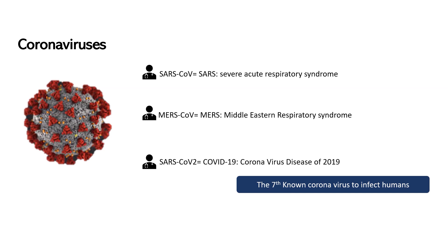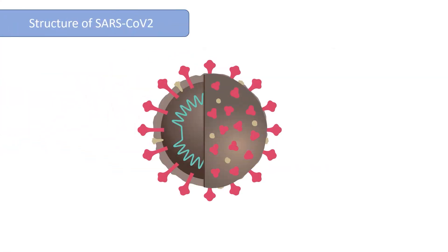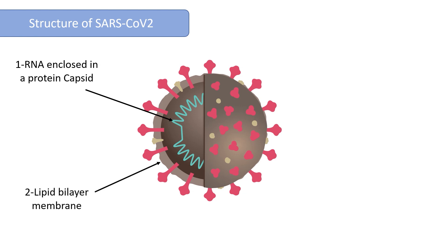Let's take a look at the structure of SARS-CoV-2. From the inside, we have the ribonucleic acid genome that is covered by a protein capsid called nucleocapsid protein N, which encloses the genetic material of this virus. These are enclosed in a lipid bilayer membrane called the viral envelope — a fatty layer that upon contact with soap breaks down, killing the virus. This is why hand washing using soap is so important to prevent the spread of this virus.